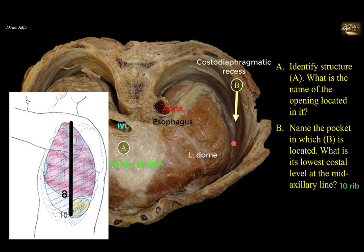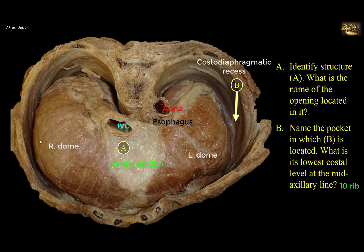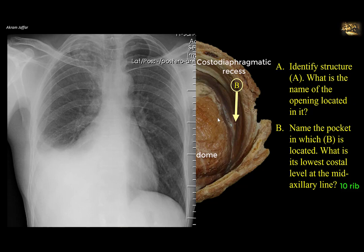The costodiaphragmatic recesses, whether left or right, are like pockets where the two layers of parietal pleura are opposed to each other. These pockets accommodate lung expansion during deep inspiration — remember the lung is two ribs higher than the inferior border of the pleura. These recesses also provide a potential space in which fluid can collect. In pleural effusion, under gravity, fluid first collects in the costodiaphragmatic recesses because they are the most dependent, appearing as a fluid level on chest X-ray. Radiologists call this region the costophrenic angle — the first place where a fluid level can be detected.